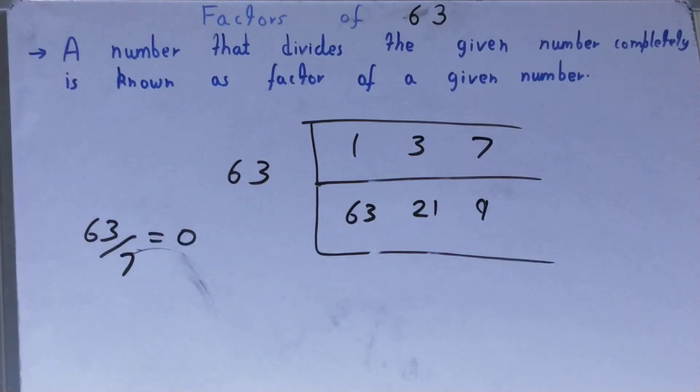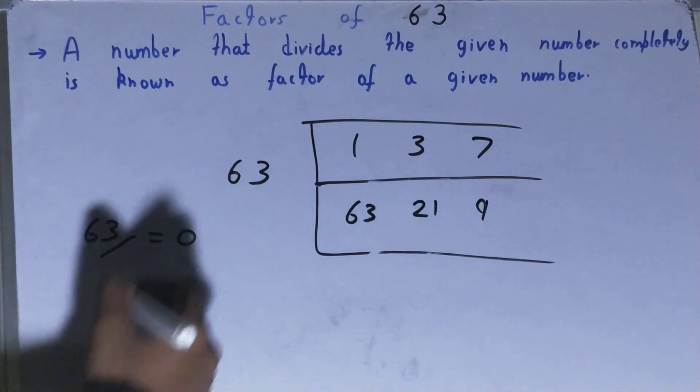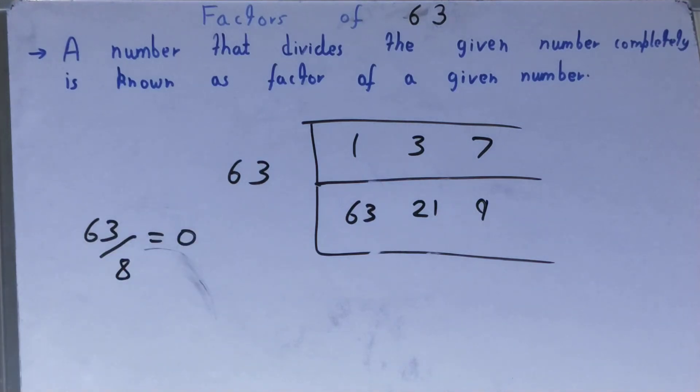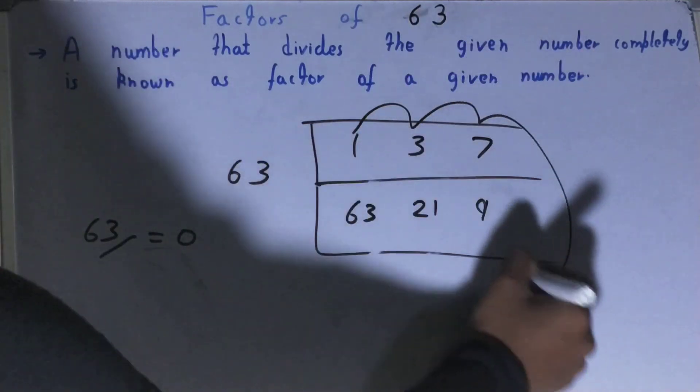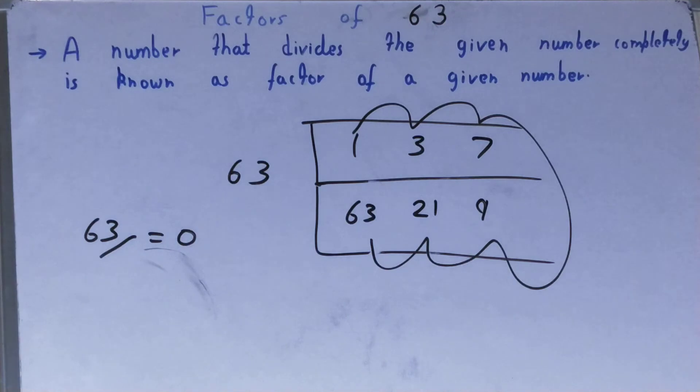If you try it with 7, will you get the remainder zero? Yes. Seven nines are 63, so 7 is a factor. And 7 times 9 is 63, so 9 is also a factor. After 7 comes 8, which you will not get. After 8 comes 9, which you already have in the list. So your work is done here. You don't need to check any further, and your set of factors for the number 63 will be 1, 3, 7, 9, 21, and 63.